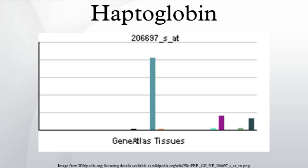The spleen and liver recognize an error in the red cells and destroy the cell. This type of destruction does not release hemoglobin into the peripheral blood, so the haptoglobin cannot bind to it. Thus, the haptoglobin will stay normal if the hemolysis is not severe. In severe extravascular hemolysis, haptoglobin levels can also be low, when large amounts of hemoglobin in the reticuloendothelial system lead to transfer of free hemoglobin into plasma.